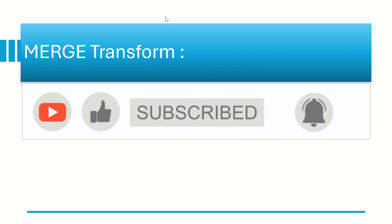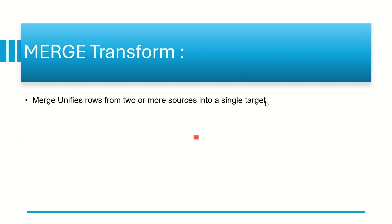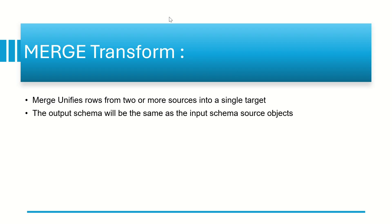What is Merge Transform? Merging two or more data sets into a single target is called Merge Transform. Merge Transform will merge two or more similar data sets into a single target. The condition is that the output schema will be the same as the input schema — the input schema source objects should be equal to the output schema objects.